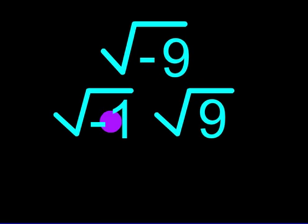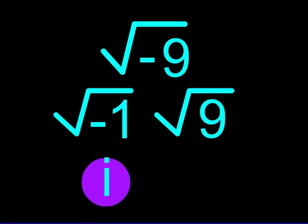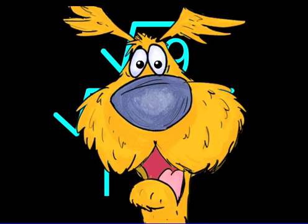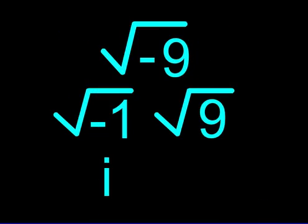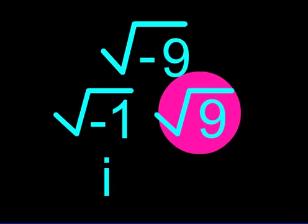The square root of negative 1 is i, which stands for imaginary number. Imaginary number? That's right! In mathematics, the square root of negative 1 is always i. Now let's find the square root of 9.